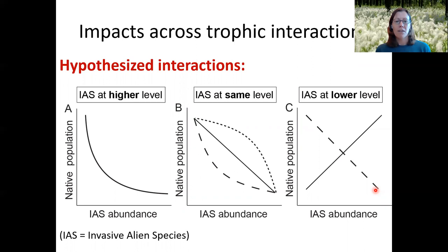In terms of habitat, altering the complexity or structure might be good for some species but bad for others. So these are hypotheses of the possible relationships between invasive species abundance and native community response.